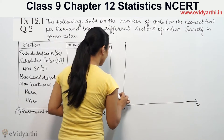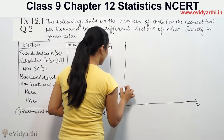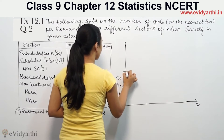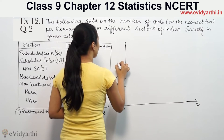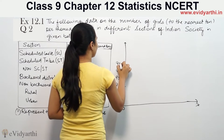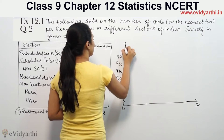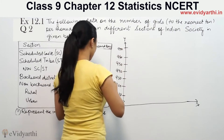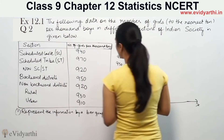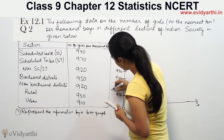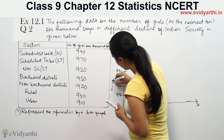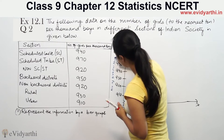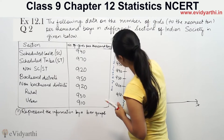The values on the y-axis start from 910: 910, 920, 930, 940, 950, 960, 970. This is the number of girls per 1000 boys.